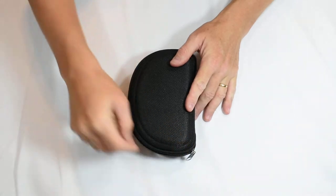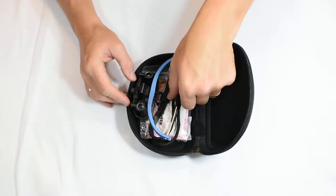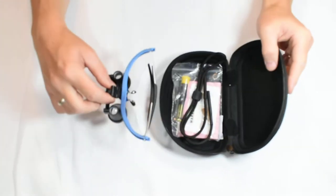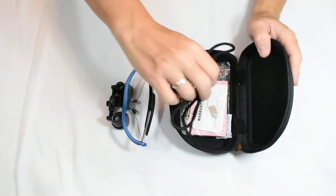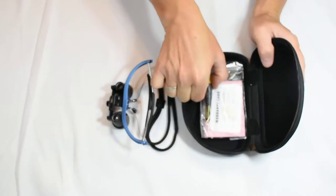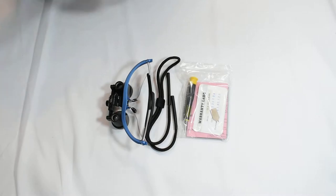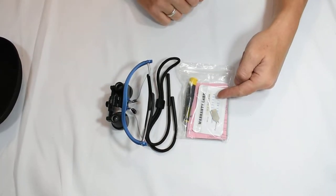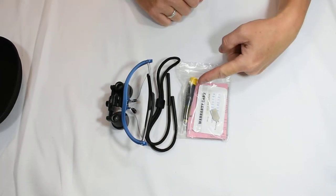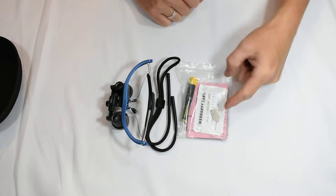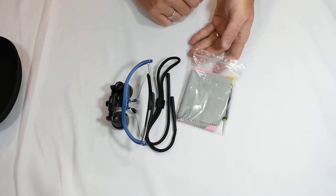As we open these we see inside our loops. Put those here. We see our head strap and then we have this accessory package which has our warranty card, instruction manual, screwdriver, flange tool, and cleaning cloth.